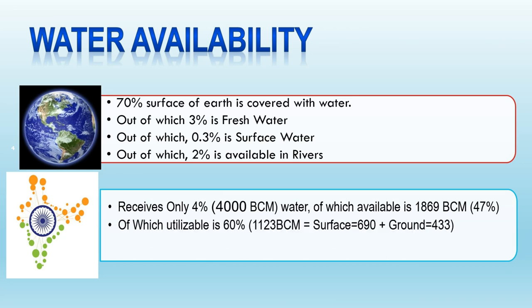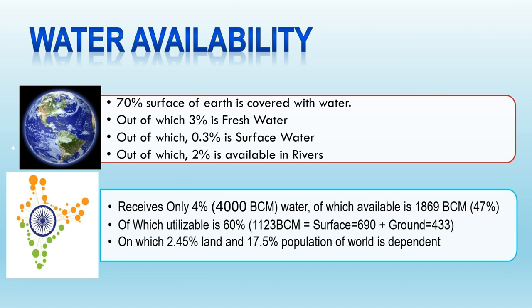From this available water, we can utilize only 60% because of several constraints — we cannot store the entire water that falls on the ground due to constraints like topography, storage conditions, submergence, infrastructure cost, and more. So we can utilize only 1,123 BCM of water, with about 690 BCM from surface water and 433 BCM from groundwater. About 2.5% of the world's land and 18% of the world's population depend on this water. There is a big disparity — only 4% water for 18% population.